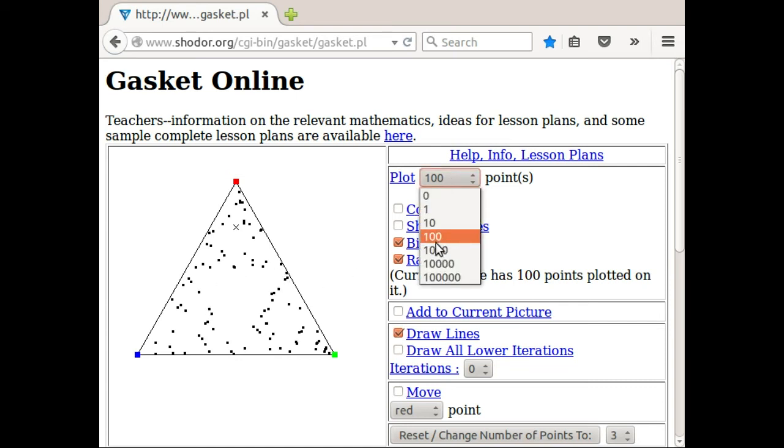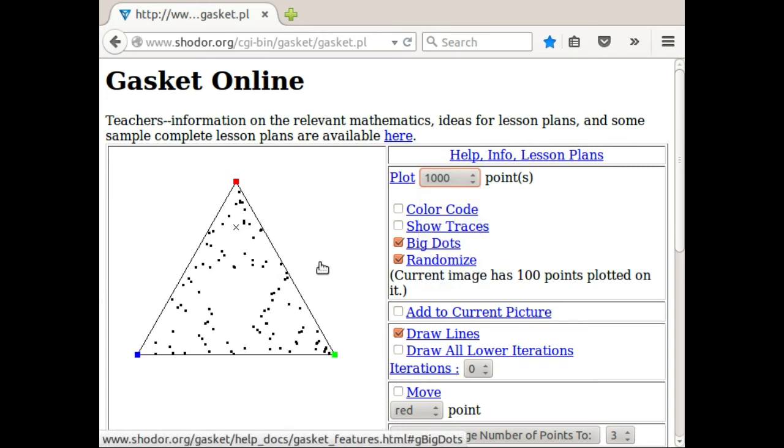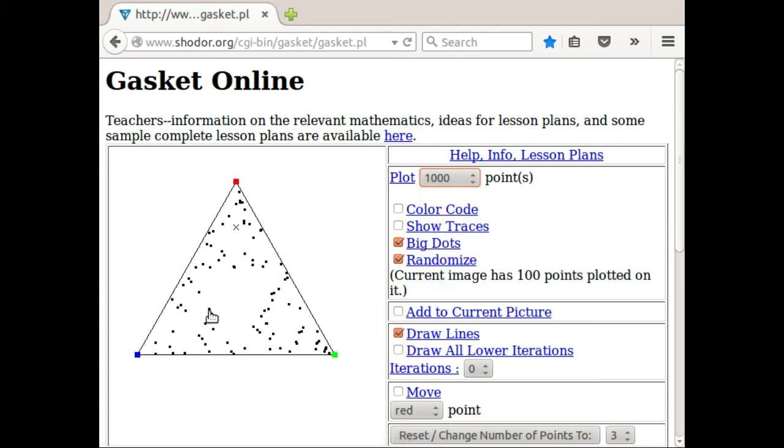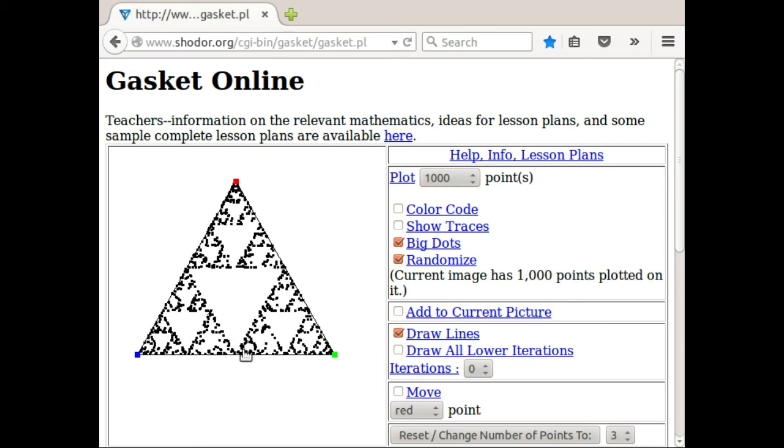Let's see what happens if instead of 100, I were to plot 1,000 points. Let's give that a shot. Here we go. Well, goodness. It's starting to look like a Sierpinski triangle. Perhaps you saw this coming. Maybe you didn't. If you haven't seen this before, it's a surprise the first time you see it, I think.